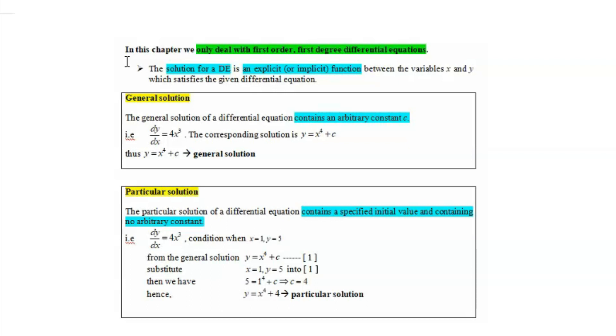say we have a differential equation like this, dy over dx equals 4x cubed. And say the corresponding solution is y equals x to the power of 4 plus c. So when the solution is having this arbitrary constant c, we call this solution a general solution.